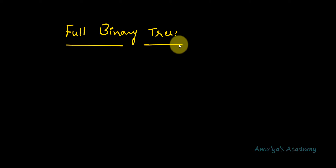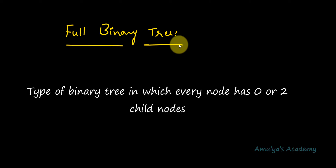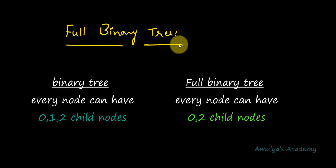The first type of binary tree is the full binary tree. It is a type of binary tree in which every node has 0 or 2 children. We know in a binary tree every node can have 0, 1, or 2 children. But in a full binary tree, every node can have 0 or 2 children — a node cannot have 1 child.